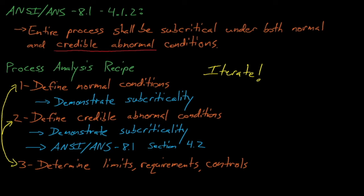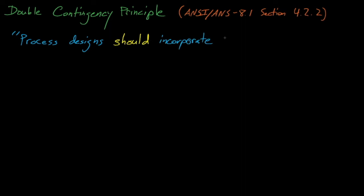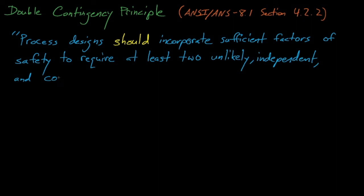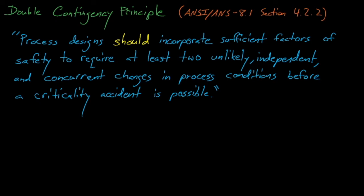When we demonstrate that our system will remain subcritical under credible abnormal conditions, it's strongly recommended that we adhere to the double contingency principle. The double contingency principle is defined in ANSI ANS 8.1 Section 4.2.2, which states that process designs should incorporate sufficient factors of safety to require at least two unlikely, independent, and concurrent changes in process conditions before a criticality accident is possible. This statement is technically optional because it uses the should verb, but it is strongly recommended for an operation to adhere to the double contingency principle whenever possible. This makes sense, since a process that is only one mistake away from an accident really isn't that safe. In fact, the double contingency principle used to be mandated with a SHALL statement, and some criticality safety engineers still think that it should use a SHALL statement.